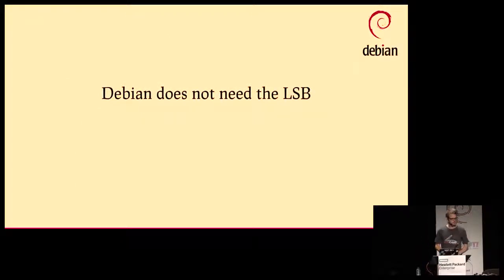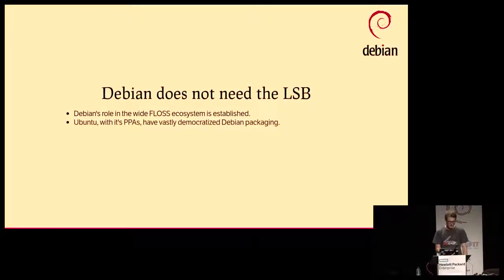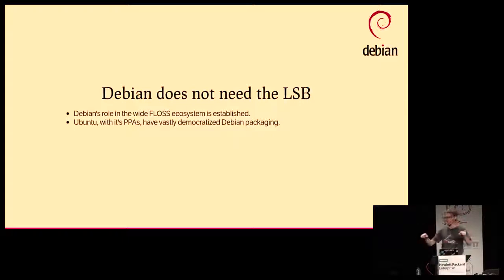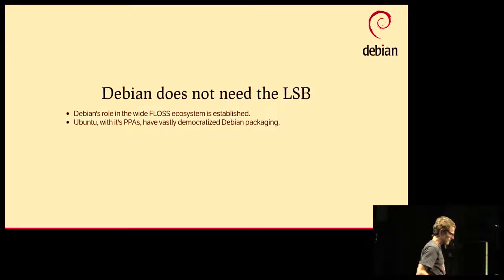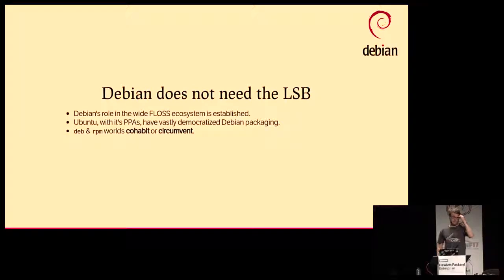The other side of the coin is that we don't need the LSB. Debian does not need the LSB. The Debian role in the FLOSS ecosystem is established now. Ubuntu with its PPAs has also vastly democratized Debian packaging — many more people actually do Debian packaging now. This fantasy of having one single LSB world on top of all distributions is just not how it works nowadays. You would do either both a DEB and an RPM package, or one of those. But it's a reality that you have to do one DEB and one RPM at the very least if you want to ship to users.